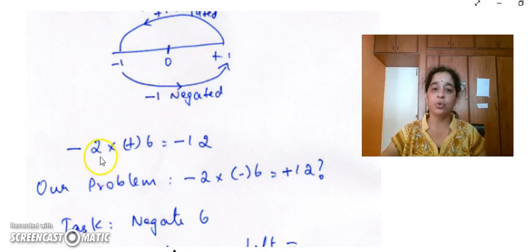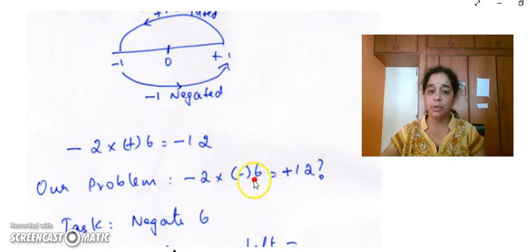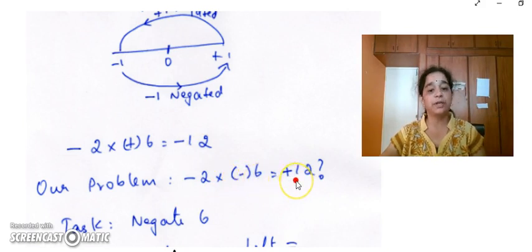Now let us go back to what we have derived. Minus 2 into plus 6 is minus 12. This is what we have derived. But our problem is minus 2 into minus 6. How does it give you a plus 12?